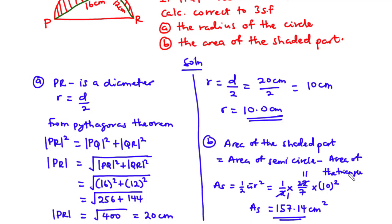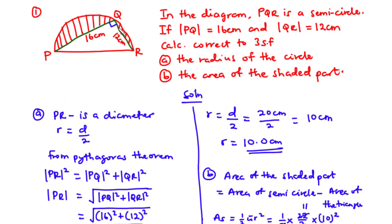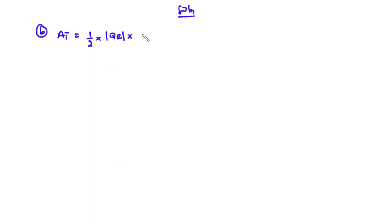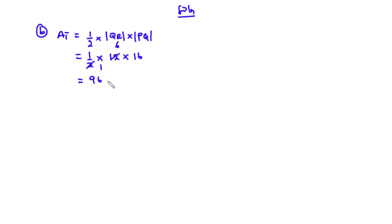Next we find the area of the triangle. The area of the triangle equals half times the base times the height. The base is QR and the height is PQ, so that is half times QR times PQ. We have QR = 12 and PQ = 16, giving us 6 times 16, which equals 96 centimeters squared. That is the area of the triangle.